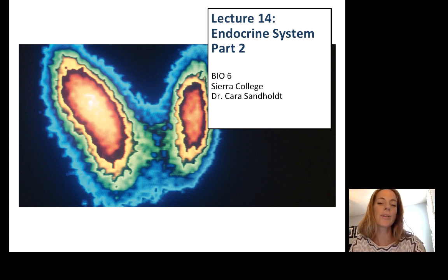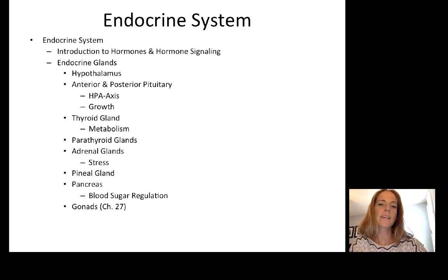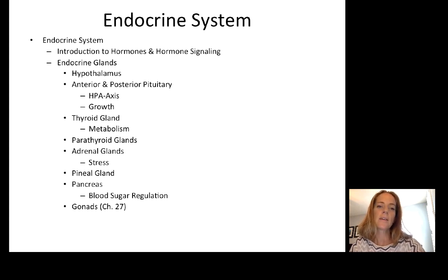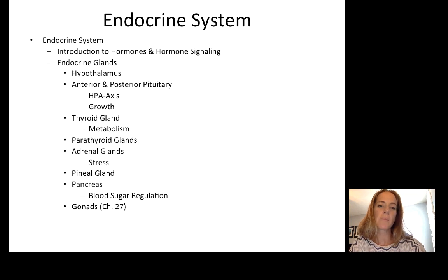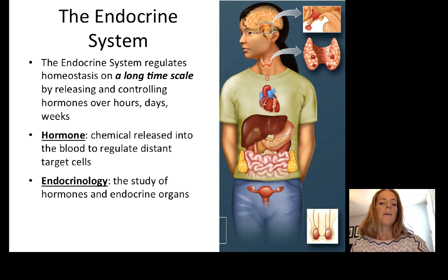Hi everyone. This is lecture 14, endocrine system part two. We are going to continue with the endocrine system where we have already talked about the basics of hormone signaling, how we control the release and the response to hormones. We have also introduced a bit about the hypothalamus and pituitary interaction that helps to regulate hormones in the glands we're going to talk about today. Let's just review a little bit in case it's been a while since you looked over lecture 13.